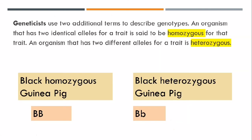Geneticists use two additional terms to describe genotypes. An organism that has two identical alleles for a trait is said to be homozygous for that trait. An organism that has two different alleles for a trait is heterozygous. For example, with hair color: if the genotype is black homozygous — homo means the same — the trait would be represented with two capital letter B's. If it is a black heterozygous genotype, the alleles have to be different: one capital letter and one lowercase.